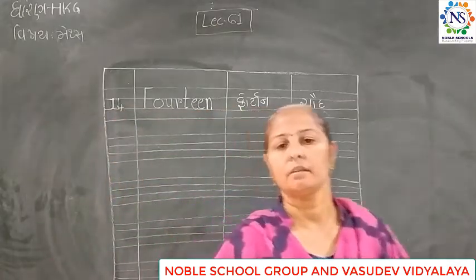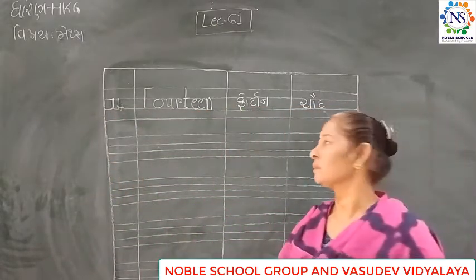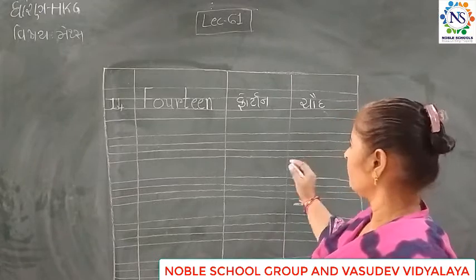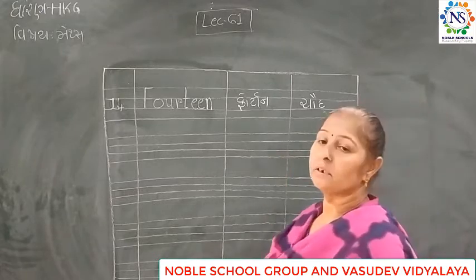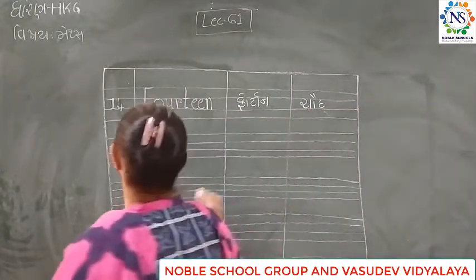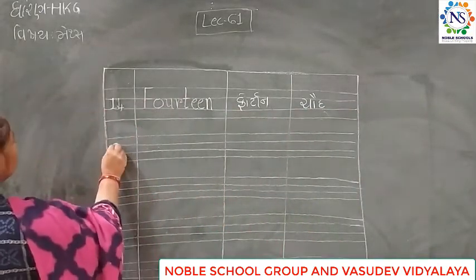Here we go. This is the one that we want to try. This is the one that we want to do. I want to choose the one. Next, we have to choose the one. Next, we are going to choose the one. So what is the one?